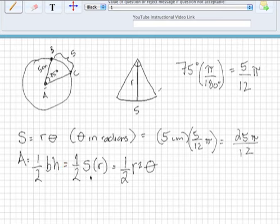our base is actually the length of our arc, and our height is our radius. So it's actually just going to be 1 half S times R, which if you simplify is 1 half times the radius squared times theta.